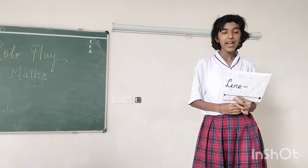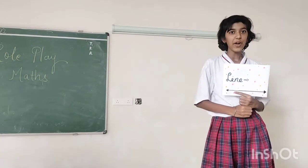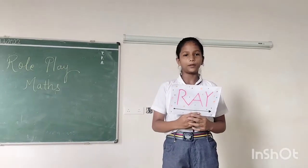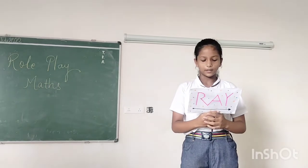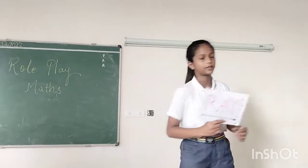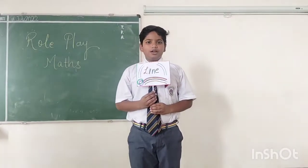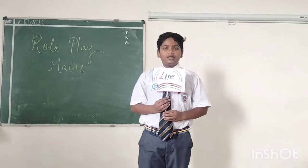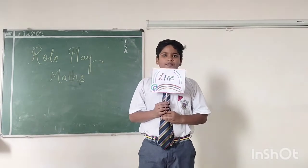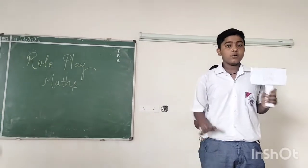Hello everyone, I am a line. I am one and that is what I am. I cannot be measured as I have no end points and I can be extended endlessly in both directions. I am a ray — I have an end point on one side and I can be extended endlessly on the other side and I cannot be measured. Thank you. I am a line and I have no end points — the important thing is I cannot be measured.